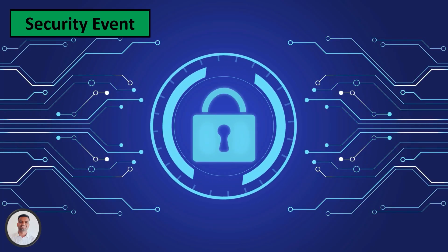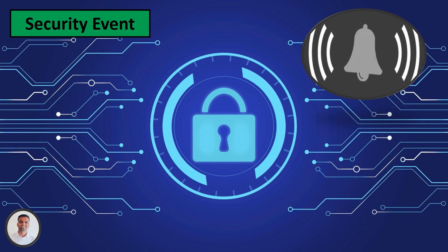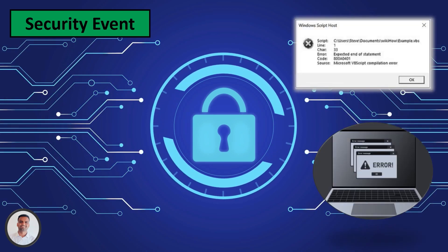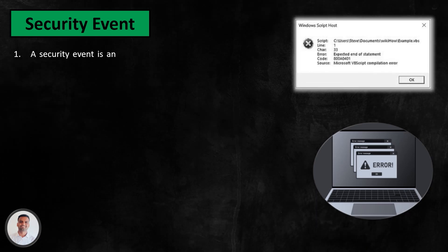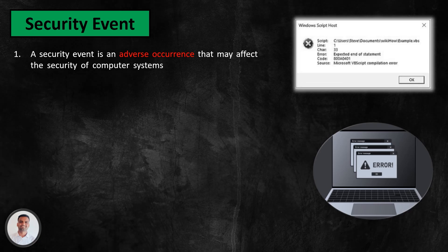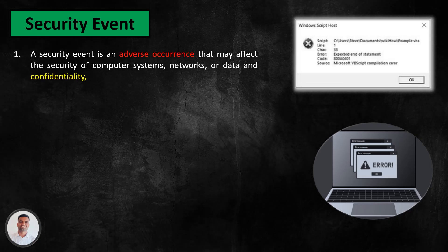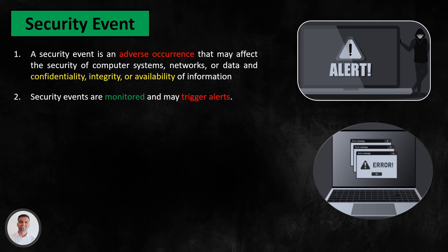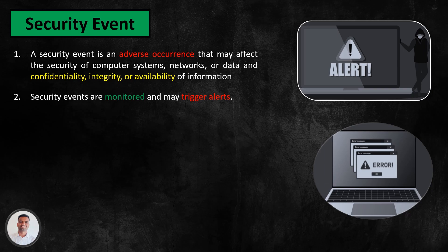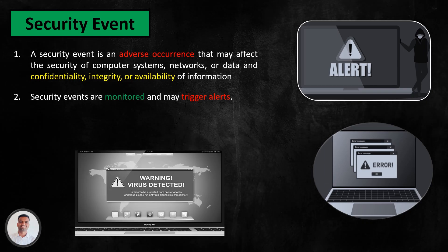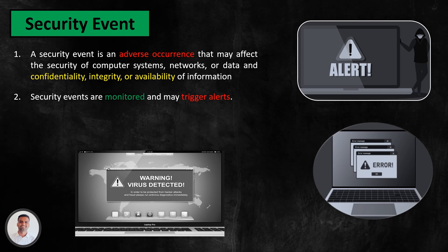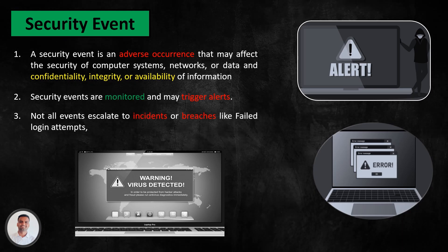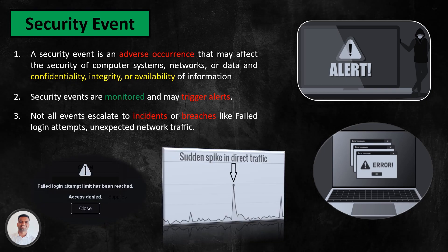A security event is like a little alarm bell that goes off in the world of computers. When something unusual happens on your computer, like a pop-up message or a warning, a security event is an adverse occurrence that may affect the security of computer systems, networks or data and the confidentiality, integrity or availability of information. Security events are monitored and may trigger alerts. For instance, antivirus software detecting a potential malware signature during a routine scan qualifies as a security event. However, not all events escalate to incidents or breaches — failed login attempts and unexpected network traffic are some examples of security events.